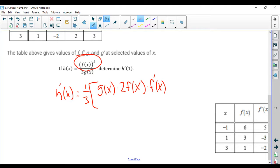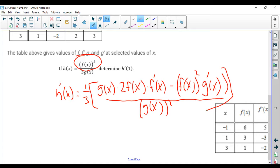So that's the bottom times the derivative of the top minus the top, times the derivative of the bottom, which is just g prime of that. And then that's all over g of x squared. So that's the derivative.